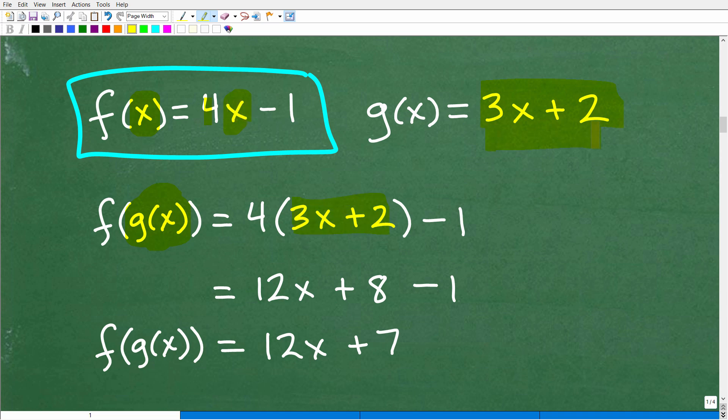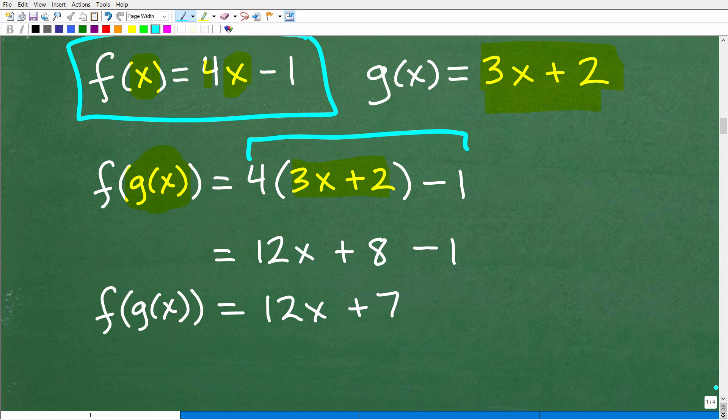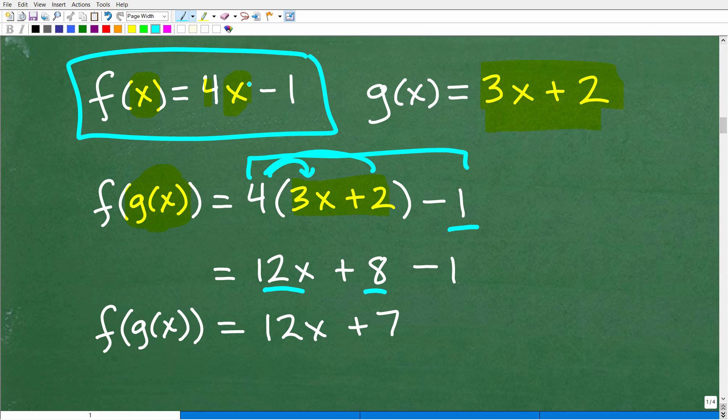And now what we have to do is just basically do the simple algebra to clean this up. So we're going to use the distributive property here. So 4 times 3x is 12x. 4 times 2 is 8 minus 1. Because you've got to be careful here because, remember, this is what we're plugging in. So you definitely have to use parentheses. Okay. You have to be very careful with that. This is the g(x) part.